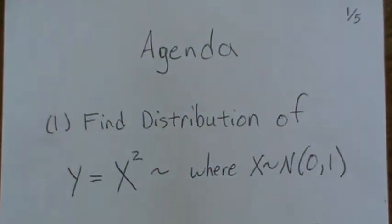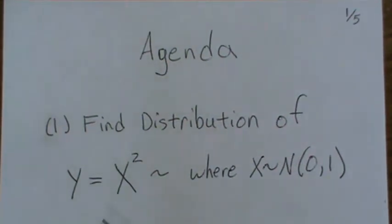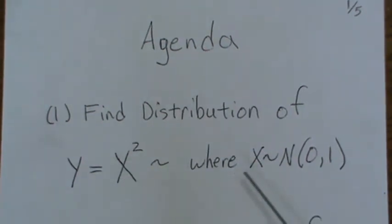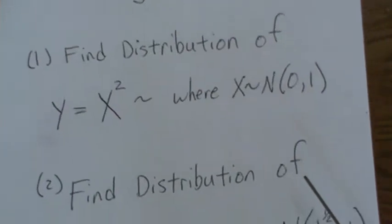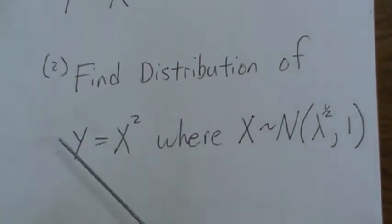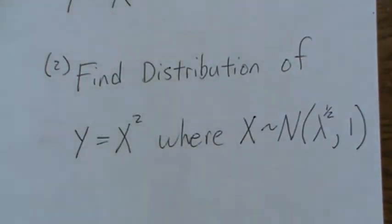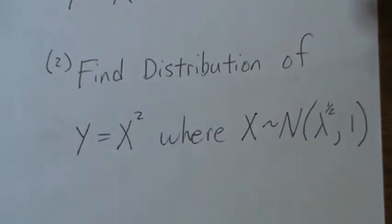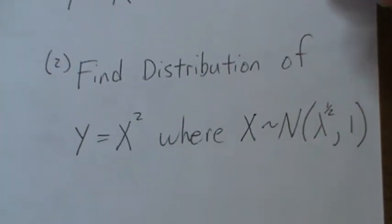The agenda for today's video is we're going to find the distribution of Y where it's the square of a single X where X is normal(0,1), and we're going to find the distribution of Y when it equals X² but X is normal(√λ, 1). We could put just μ here, but this notation is going to help in another video when I prove or show the general distribution of a non-central chi-square.